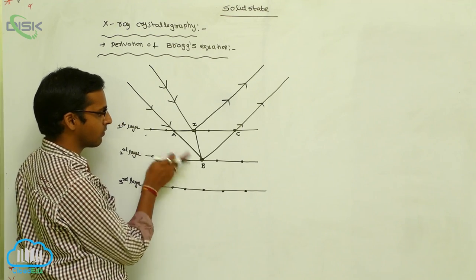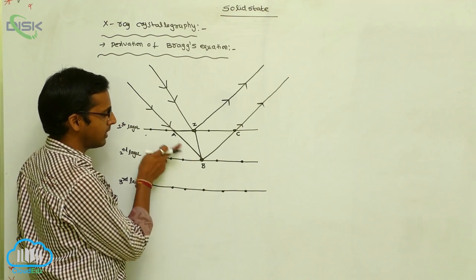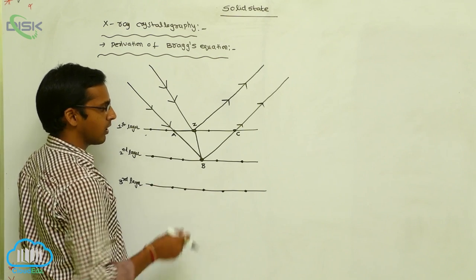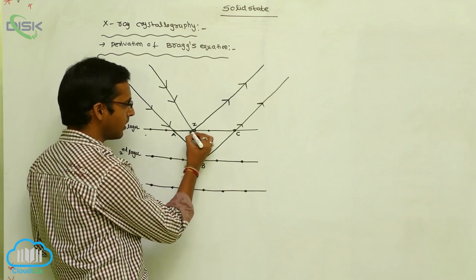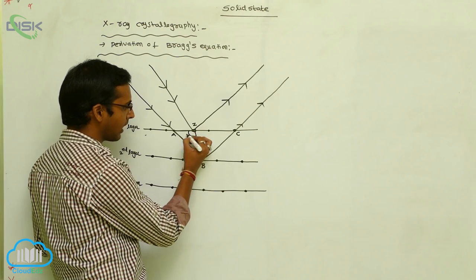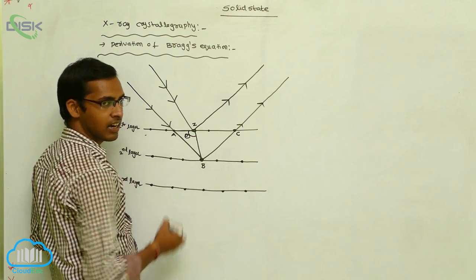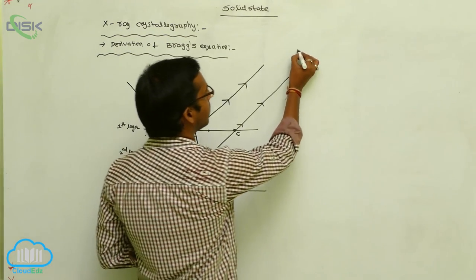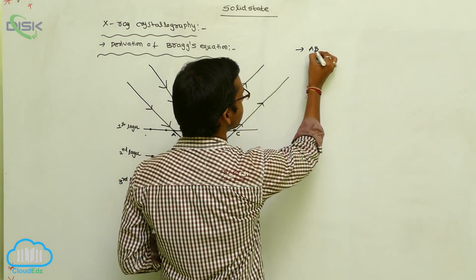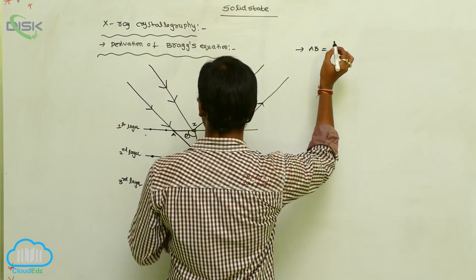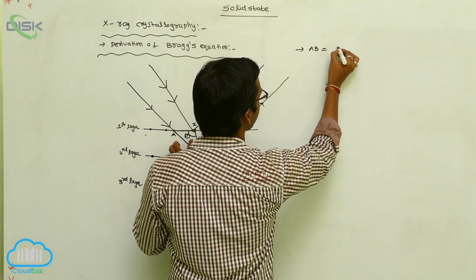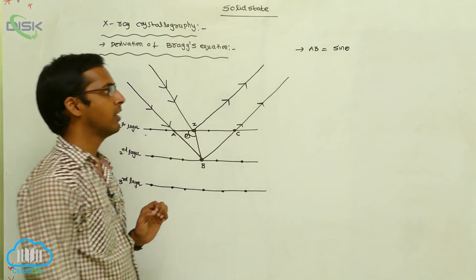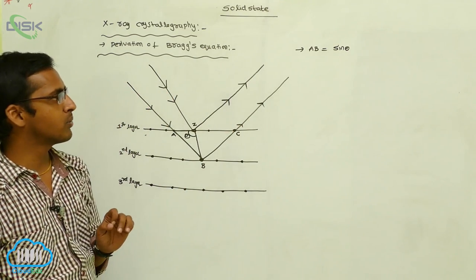By using trigonometry, the AB distance is deviated by an angle called theta. Generally, that is sine theta. So the AB distance is deviated with angle theta, that is sine theta. Therefore, AB is equal to sine theta, and with distance D, that becomes D sine theta.